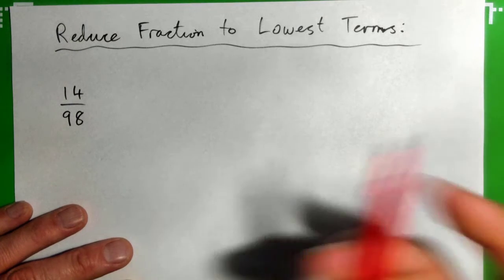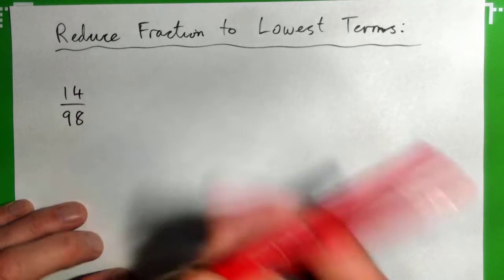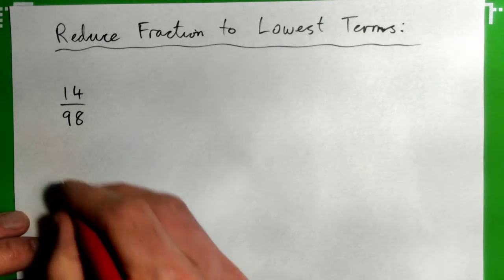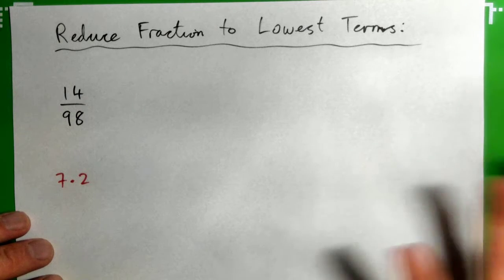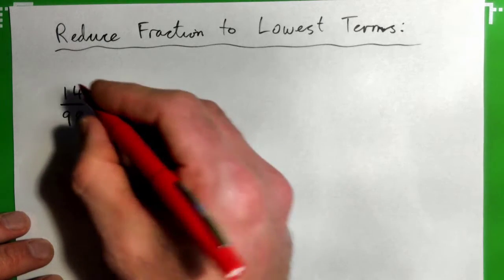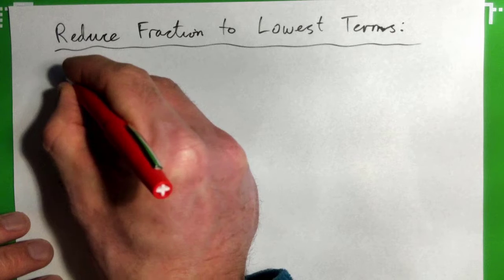You could even factorize, that might help. 14 is 7 times 2, right? That kind of helps. So you can think, okay, 7 into 14 goes twice.